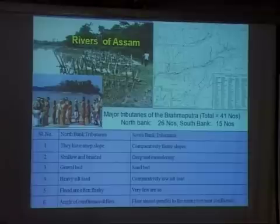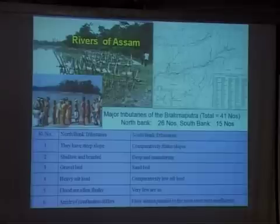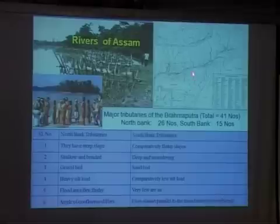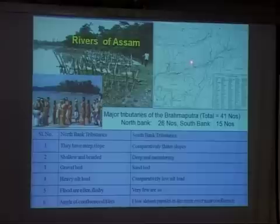Let me now take you through the state-wise distribution of the rivers. Within the northeast, the floodplain part surrounded by the hills and the Himalayas, the Nagapatkai, and this side by the Mizoram hills, is a small narrow strip. And you can see a series of small rivers joining the main Brahmaputra.